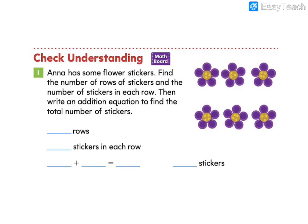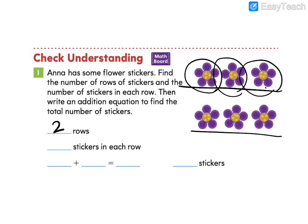Pause the video if you need any more time to solve. You should have found that there were 2 rows of stickers, 3 stickers in each row. So we know we have 2 groups of 3 stickers. Our equal addends are 3. 3 plus 3 is equal to 6. There are a total of 6 stickers.